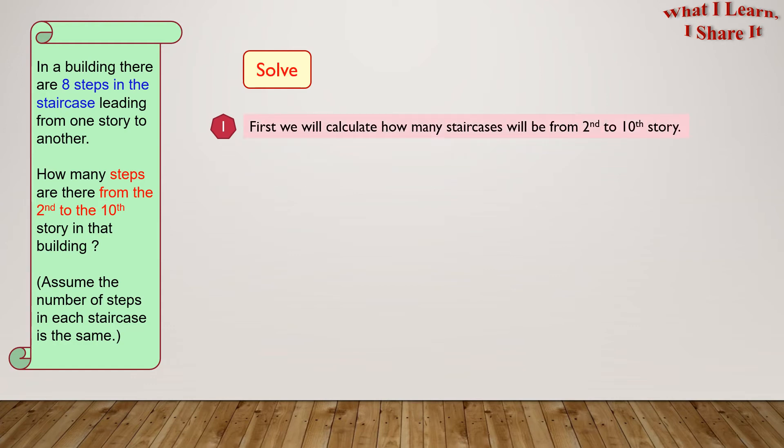Step 3. Solve. Let's start with the first step. From the 2nd to the 3rd story, there will be one staircase. From the 3rd to the 4th, there will be another staircase. From the 4th to the 5th, there will be another staircase.